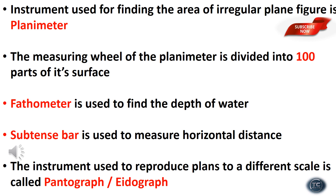The instrument used for finding the area of an irregular plane figure is the planimeter. The measuring wheel of the planimeter is divided into 100 parts on its surface.